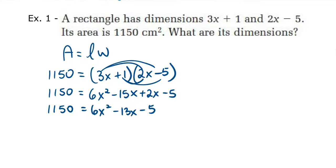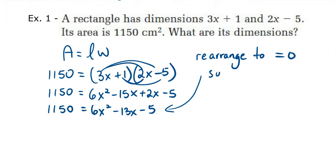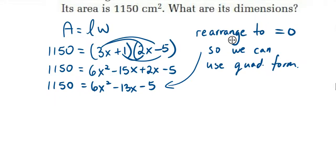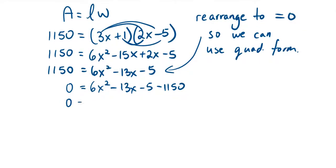When solving equations, we have to rearrange so that one side of the equation is equal to 0, and then we can use the quadratic formula. We're going to subtract 1150 from both sides: 0 equals 6x² minus 13x minus 5 minus 1150. Simplifying, minus 5 and minus 1150 becomes minus 1155.